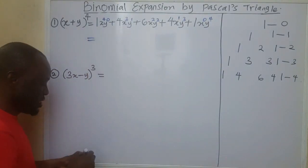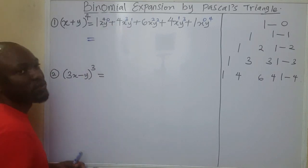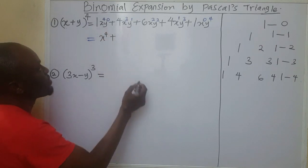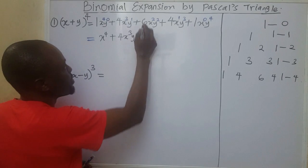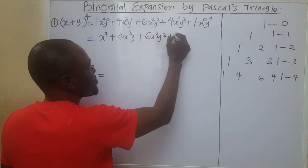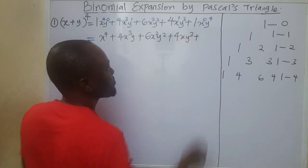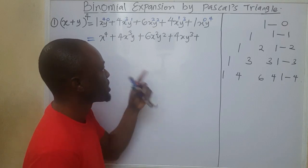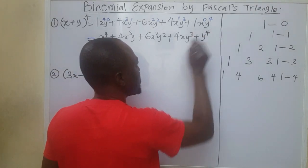Now I'm going to tidy this up. Y raised to the power of 0 will give me 1. So I have x raised to the power of 4, plus 4x cubed y, plus 6x squared y squared, plus 4xy cubed, plus 1 times y raised to the power of 4, which gives y raised to the power of 4.